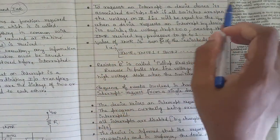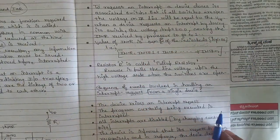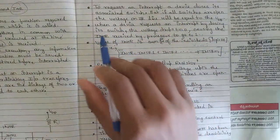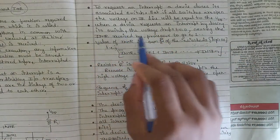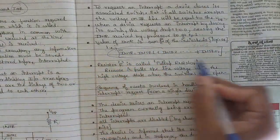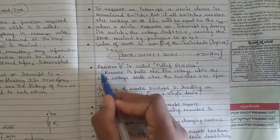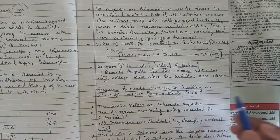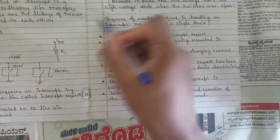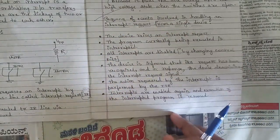To request an interrupt, a device closes its associated switch. When all switches are open, the voltage on the IR line equals VDD. When a device requests an interrupt by closing its switch, the voltage drops to 0, causing the INTR signal received by the processor to go to 1. The resistor R is called the pull-up resistor because it pulls the line voltage up to the high voltage state when switches are open. Please pause the video and refer to the sequence of events for handling an interrupt from a single device.